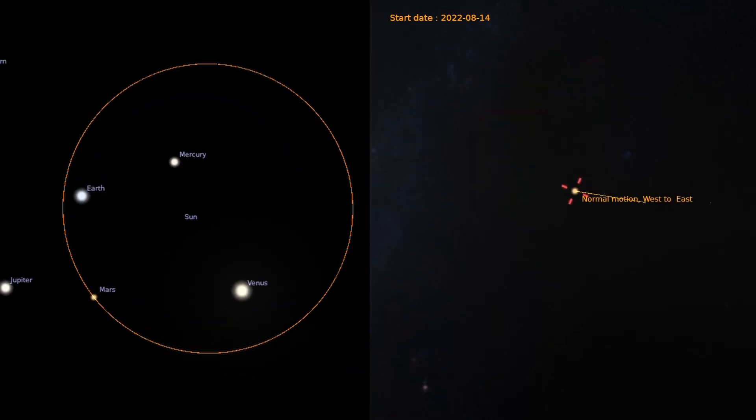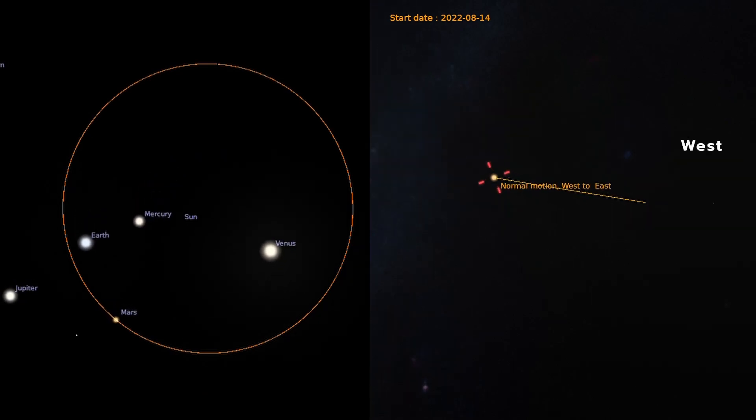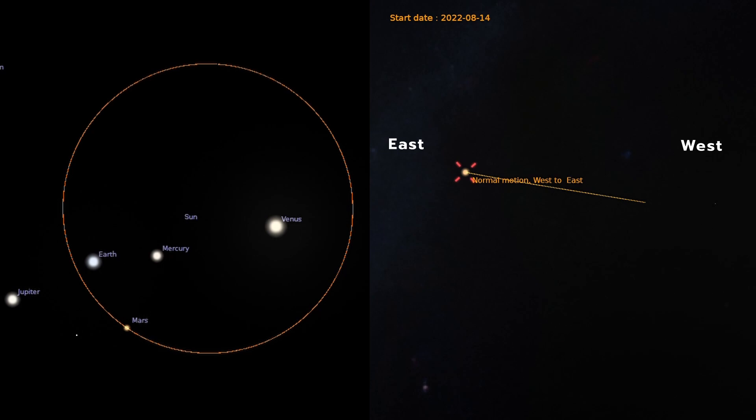If we note the position of Mars at the same time every night, Mars appears to move from west to east from one night to the next.